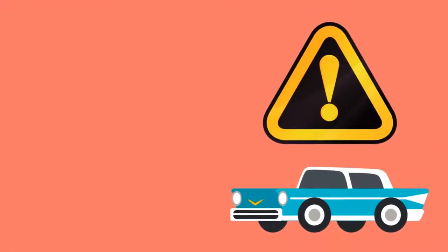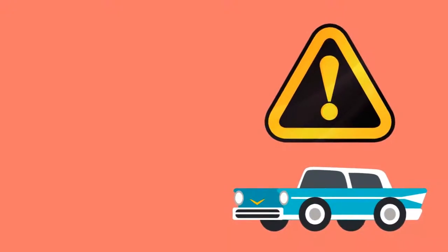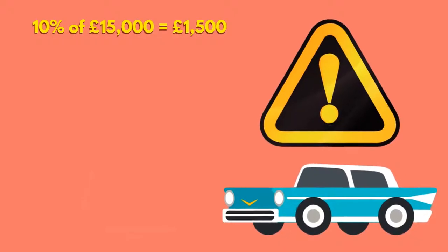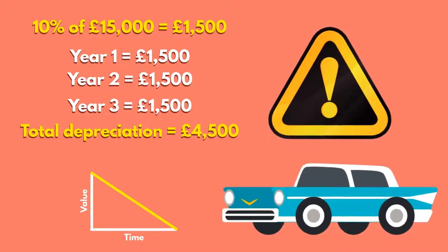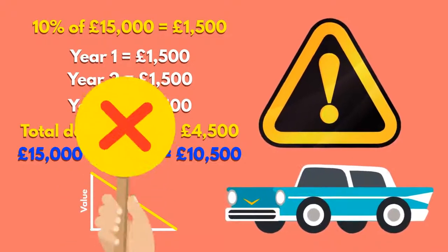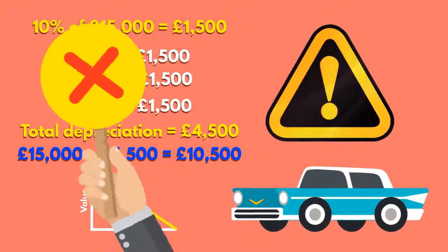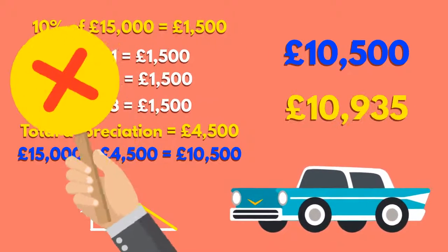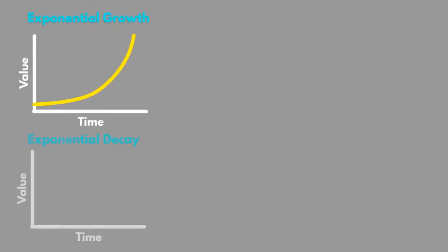Remember to be careful here — this is commonly calculated incorrectly. 10% of £15,000 equals £1,500, and a common mistake is to multiply by the number of years, which gives £4,500 to take away from the original value. This is not correct. We must remember to calculate 10% of the current value, not the original value. £10,500 is different to the £10,935 seen before. Remember, cars will always have some value, even if it's just for the material scrap value.